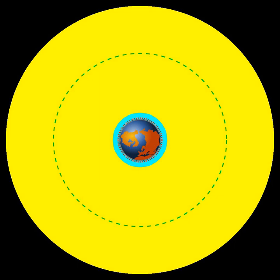Prograde orbit, an orbit with an inclination of less than 90 degrees, or equivalently, an orbit that is in the same direction as the rotation of the primary.